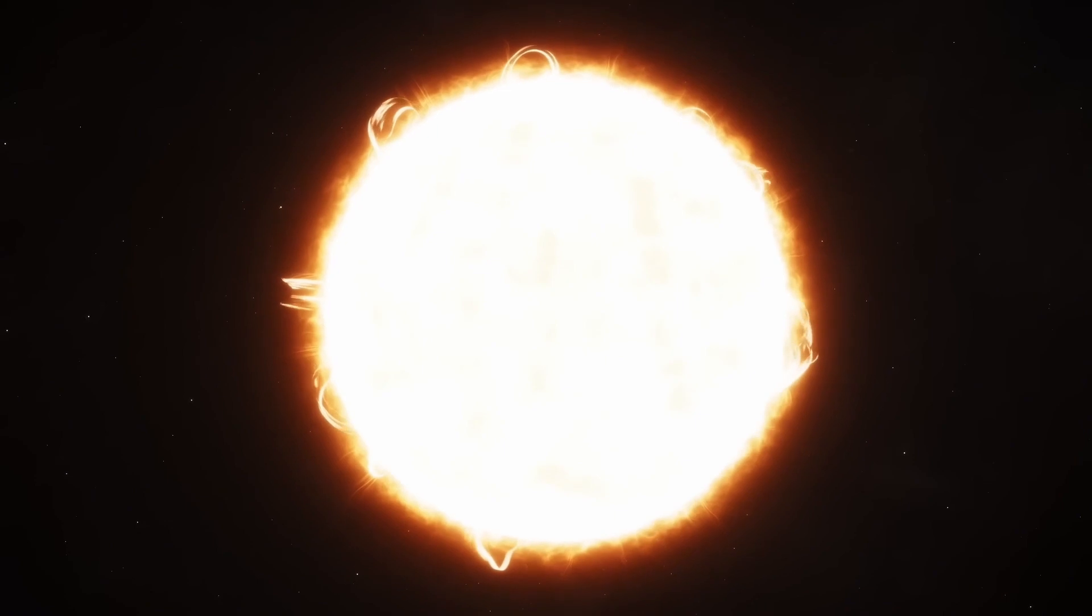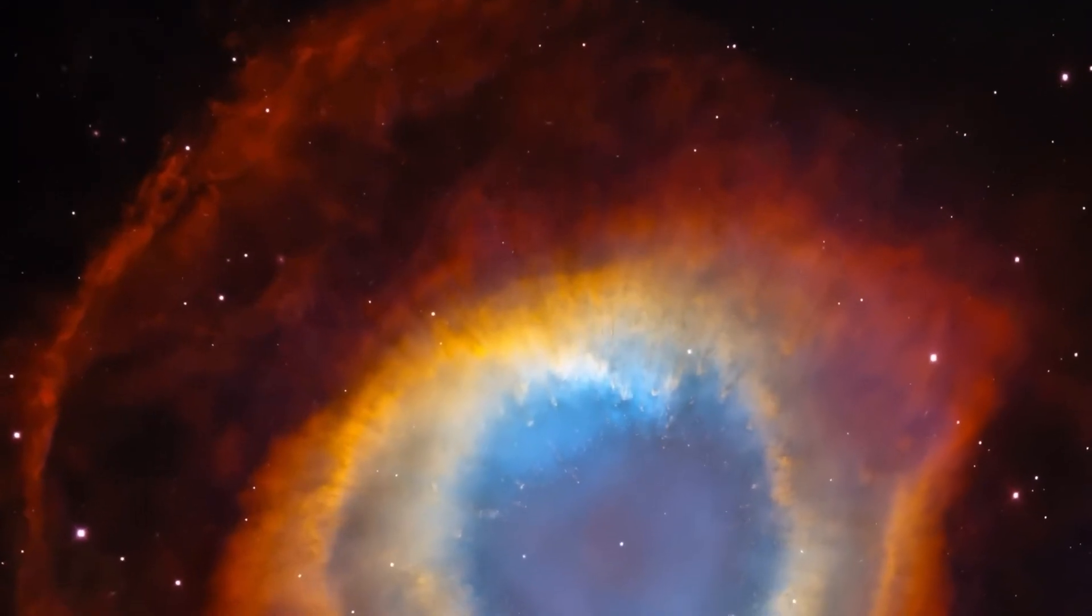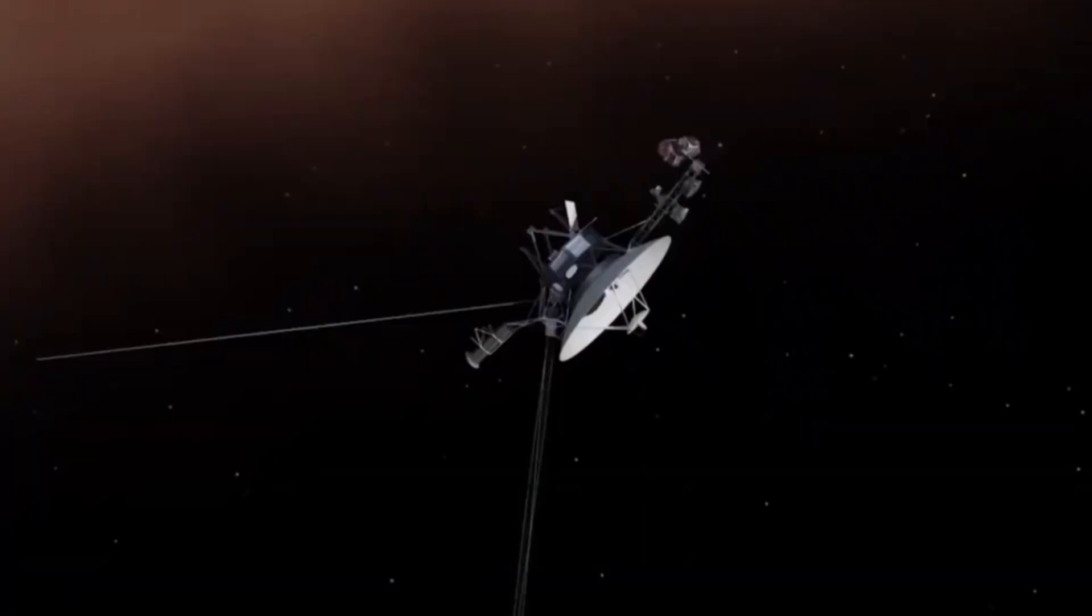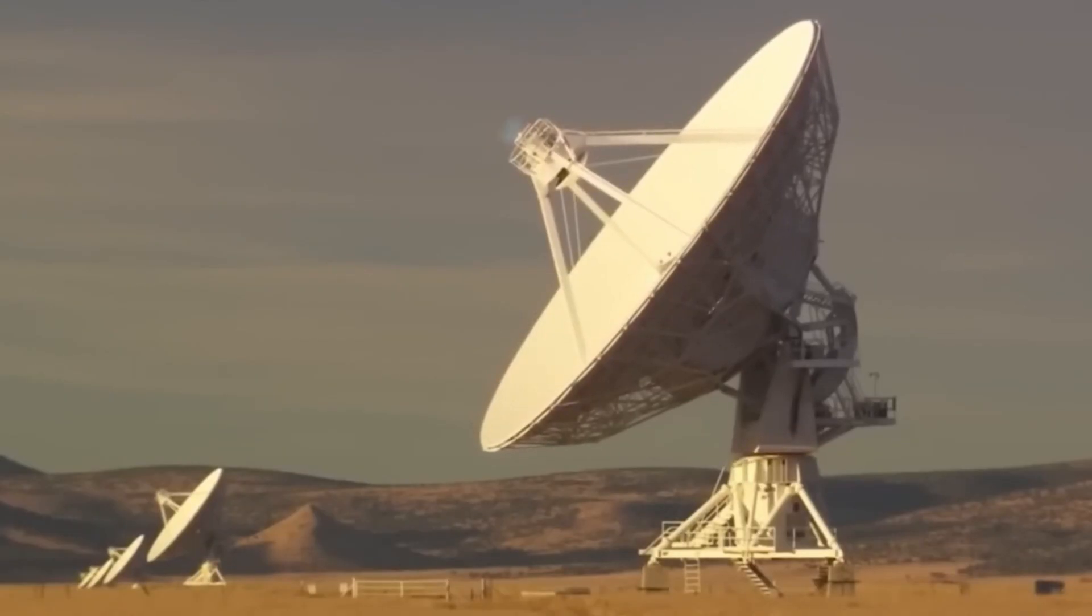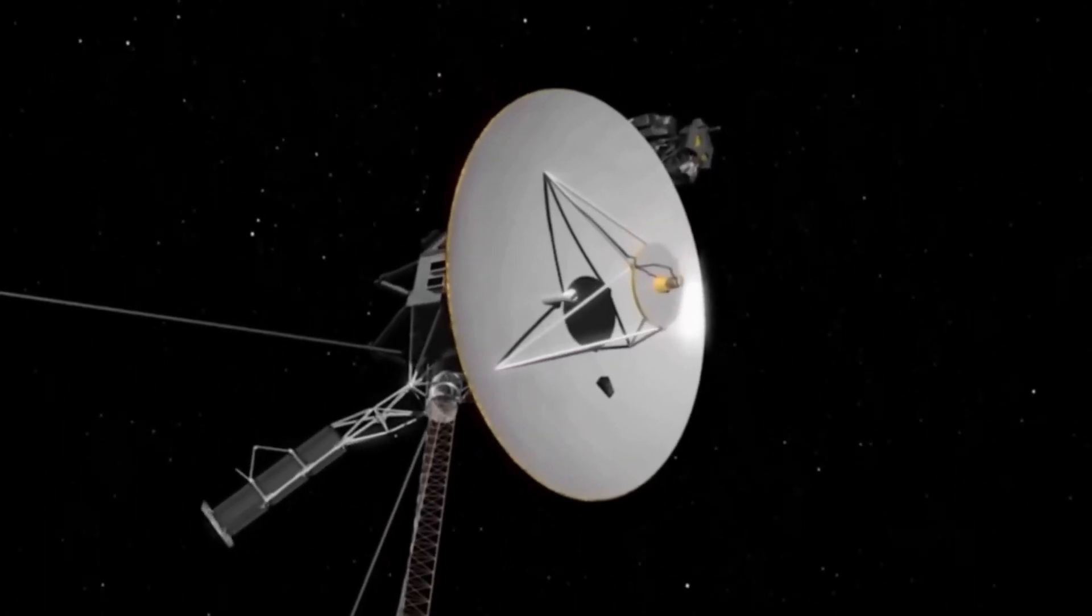Engineers increased the mission's goals to include Uranus and Neptune, two extra-large planets, following their initial success. The pair of spacecraft have visited four planets, 48 moons, a variety of planetary magnetic fields, and many planetary rings.